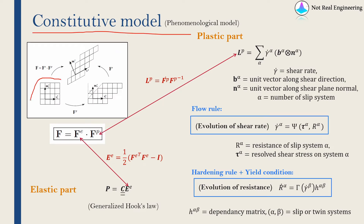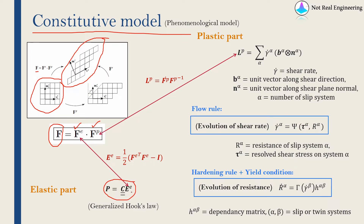Now let's see the constitutive model. Imagine this is an undeformed configuration and this one is a deformed configuration — using the deformation gradient we can convert between them. Similar to plasticity theory, in crystal plasticity we assume the deformation gradient can be represented by two separate gradients: an elastic deformation gradient and a plastic deformation gradient, and their multiplication gives us the total deformation gradient. The constitutive model gives us the relation between these deformation gradients and stresses. For the elastic part it is the same as finite deformation elasticity theory, and the relation is given by generalized Hooke's law, where the elastic strain E^E is related to F^E by this equation.